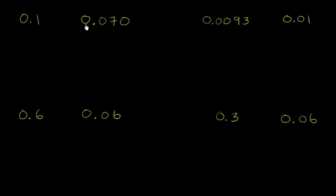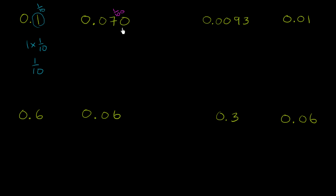Let's compare 0.1 to 0.070. This 1 right over here is in the tenths place, so it literally represents 1 times 1 tenth, which is obviously the same thing as 1 tenth. Now when we look at this number right over here, it has nothing in the tenths place. It has 7 in the hundredths place — this is the hundredths place right over here — and then it also has nothing in the thousandths place. So this number can be rewritten as 7 times 1 over 100, or 7 hundredths.